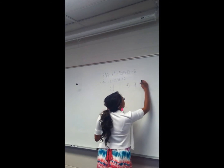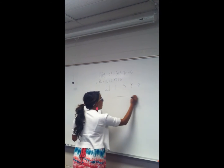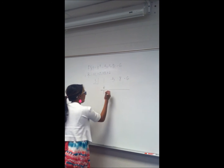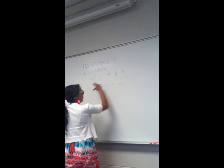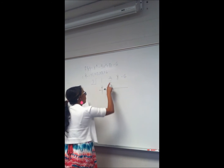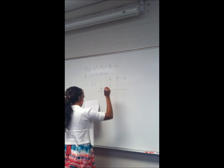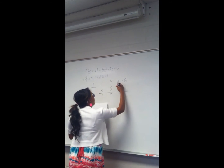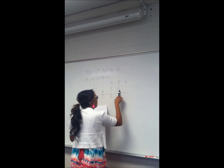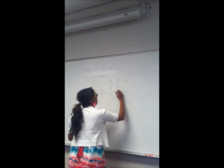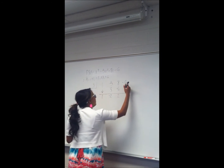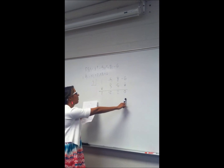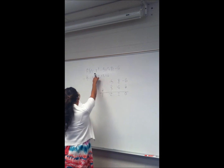negative five, eight, and negative six. Using synthetic division, you'll always drop down the first number, so the first number is one. Now we multiply one times three, and we're adding. So negative five plus three will be negative two. Three times negative two is negative six; eight plus negative six will be two. And three times two is six, giving us a remainder of zero. Because we have a remainder of zero, we can tell that three is a factor of f of x.